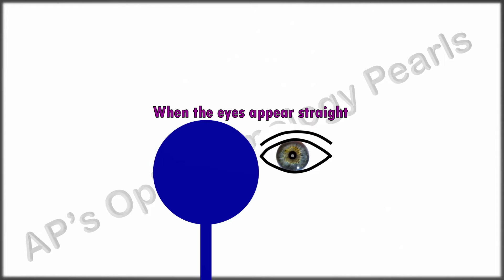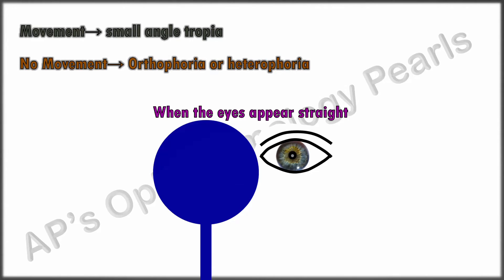How do we interpret these tests when the eyes appear straight? Since both eyes appear to be fixing, the cover test is performed first on one eye and then the other, always observing the unoccluded eye. If movement of the unoccluded eye is noted, it means a small-angle tropia not obvious on casual examination is present.